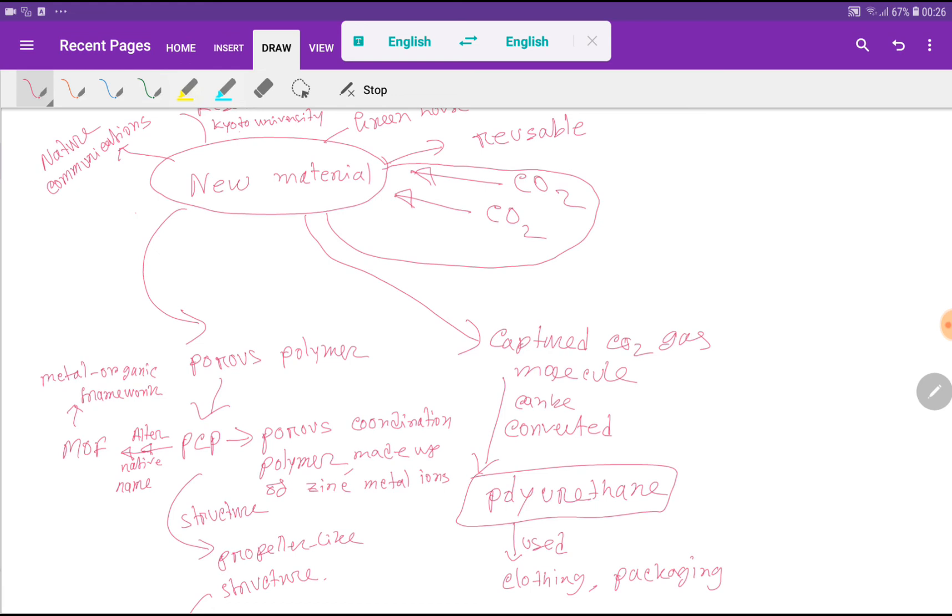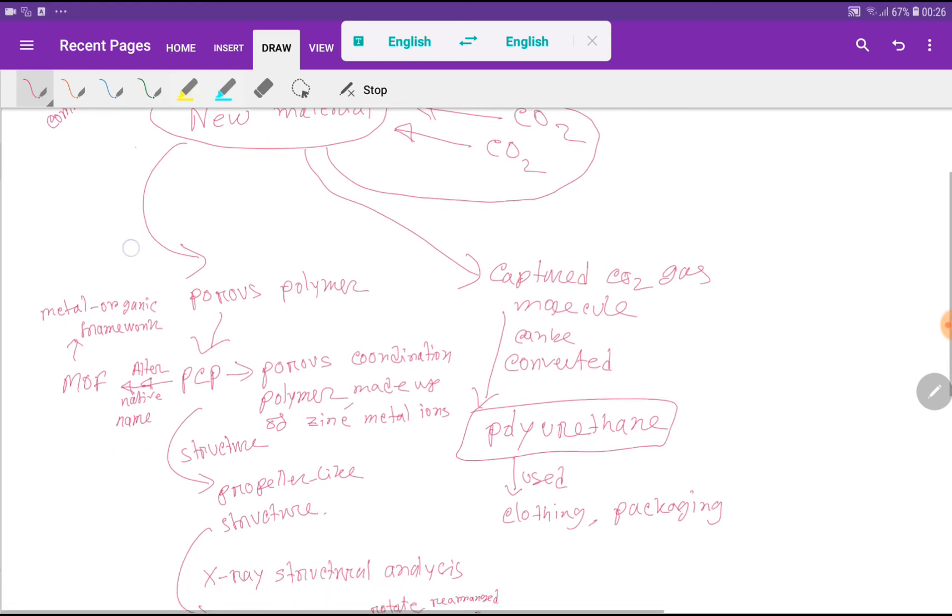Now let me tell you something about the structure of PCP, that is Porous Coordination Polymer. Actually, its structure is like propeller-like structure. It has structure like propeller-like structure.